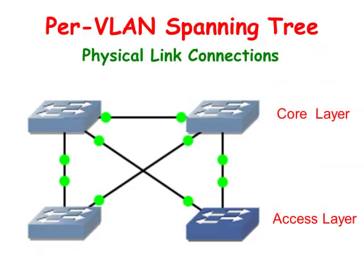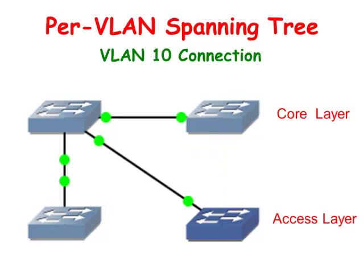Per VLAN Spanning Tree maintains a spanning tree instance for each VLAN configured in the network. It uses ISL trunking and allows the VLAN trunk to be forwarding for some VLANs while blocking for other VLANs.